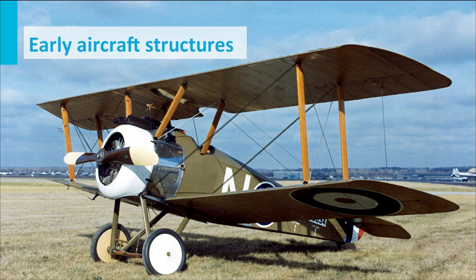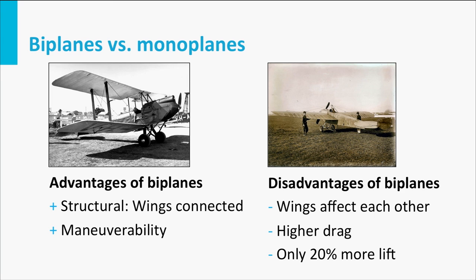The fuselage of this aircraft, although it has some metal plating in front, is made of a truss structure covered by linen. Besides the structural advantage, a biplane had better maneuverability. But biplanes also had disadvantages: the airflow around the wings affects each other, two wings result in higher drag during flight, and increasing the wing area by an extra wing does not imply that the wing forces are doubled. The two wings of a biplane offer just 20% more lift than a monoplane. Therefore, in the end, monoplanes got the upper hand.